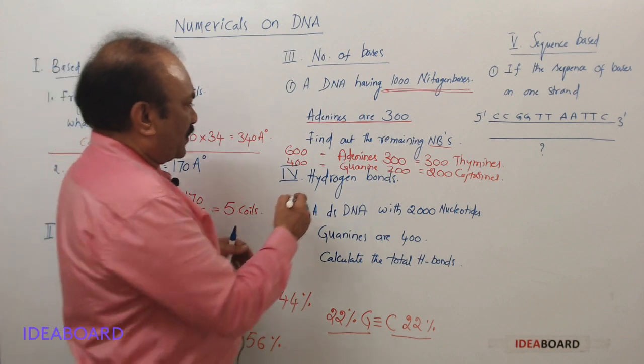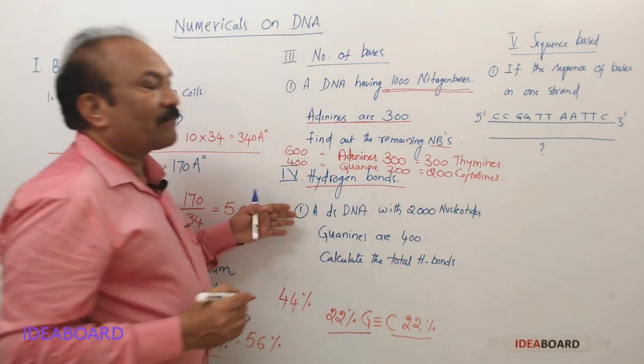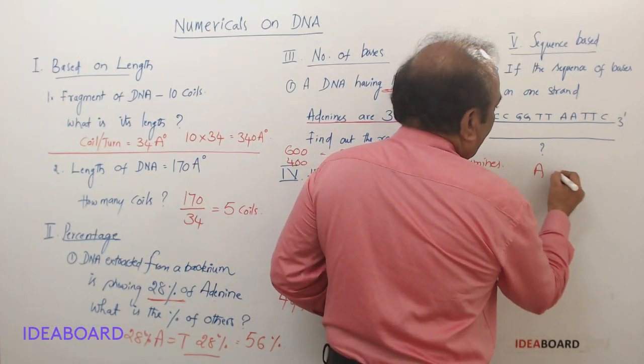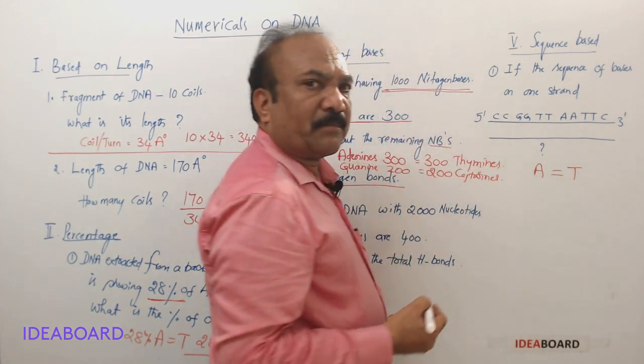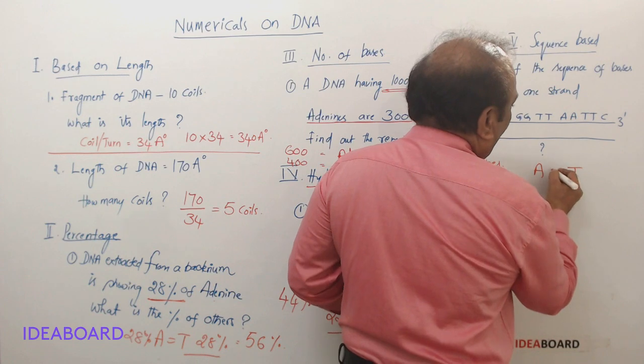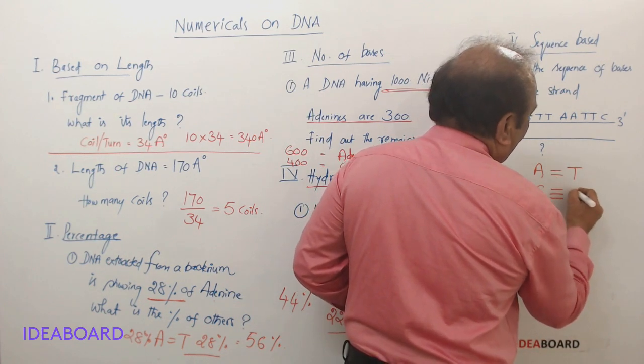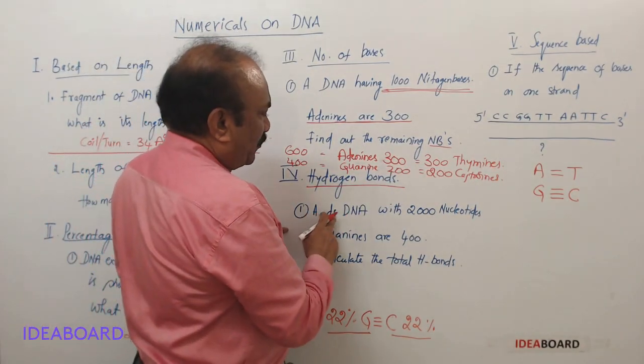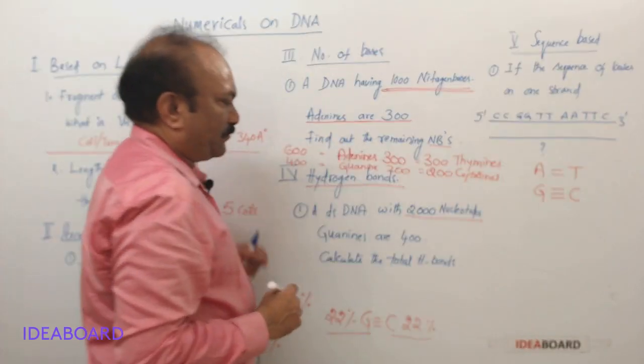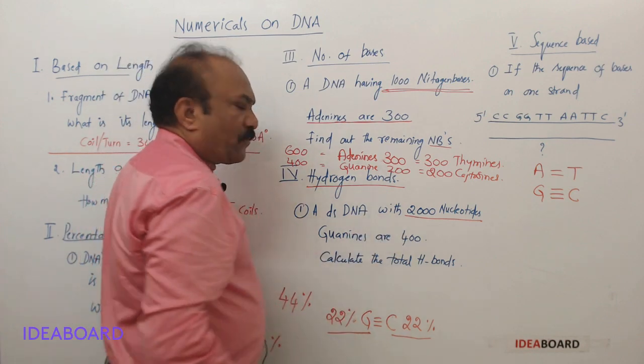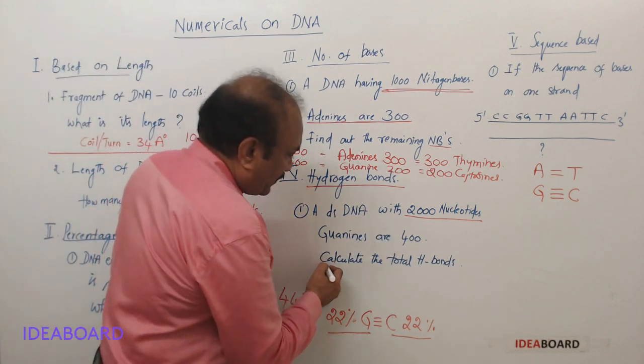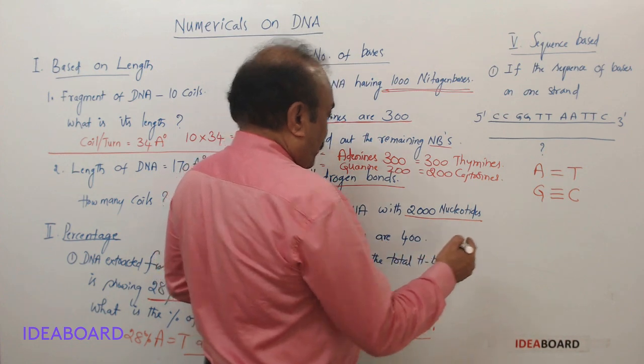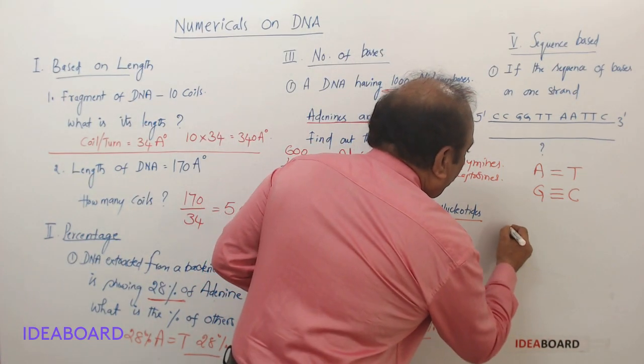Now let us see the fourth type of question. They may sometimes ask about calculating the number of hydrogen bonds. We know already that A-T and G-C are complementary base pairs, and between A and T, double hydrogen bond, and between G and C, triple hydrogen bonds exist. Here the question: a double-stranded DNA with 2000 nucleotides, so here we have to calculate the total number of hydrogen bonds. Let us see: 400 guanines.